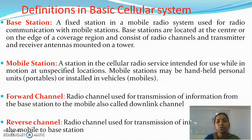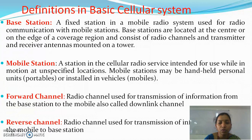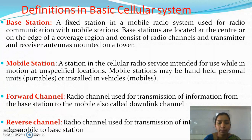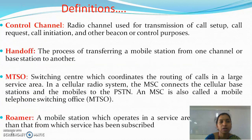The forward channel is a radio channel used for transmission of information from the base station to mobiles, also called the downlink channel. The reverse channel is a radio channel used for transmission of information from mobile to base station, and is called the uplink channel. Generally there is confusion between these two channels: transmission from base station to mobile is the downlink, and transmission from mobile to base station is the reverse or uplink channel.